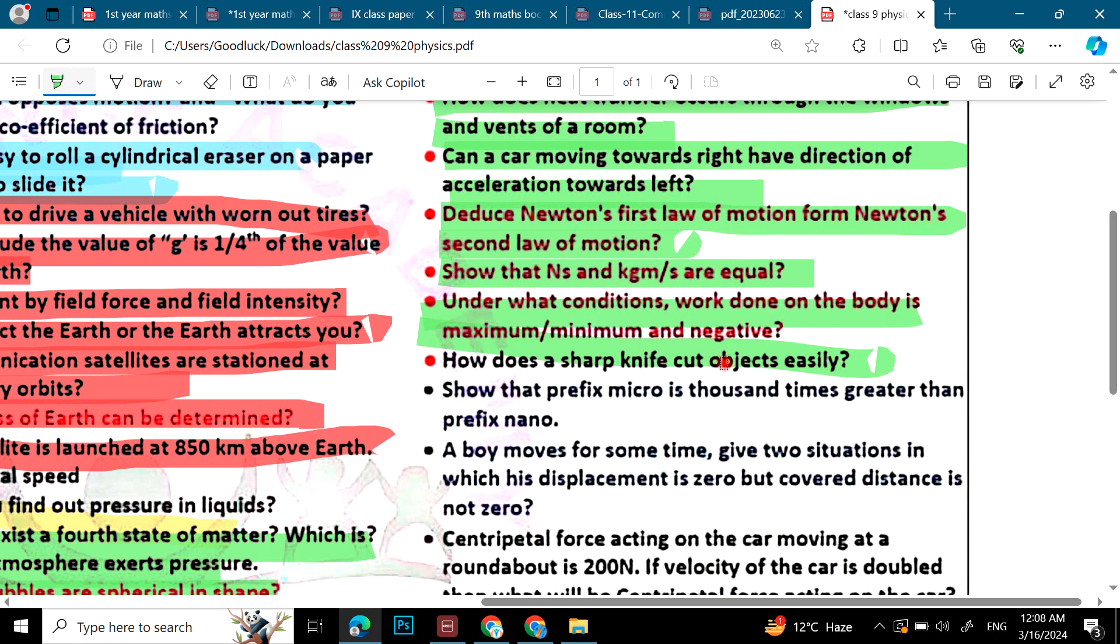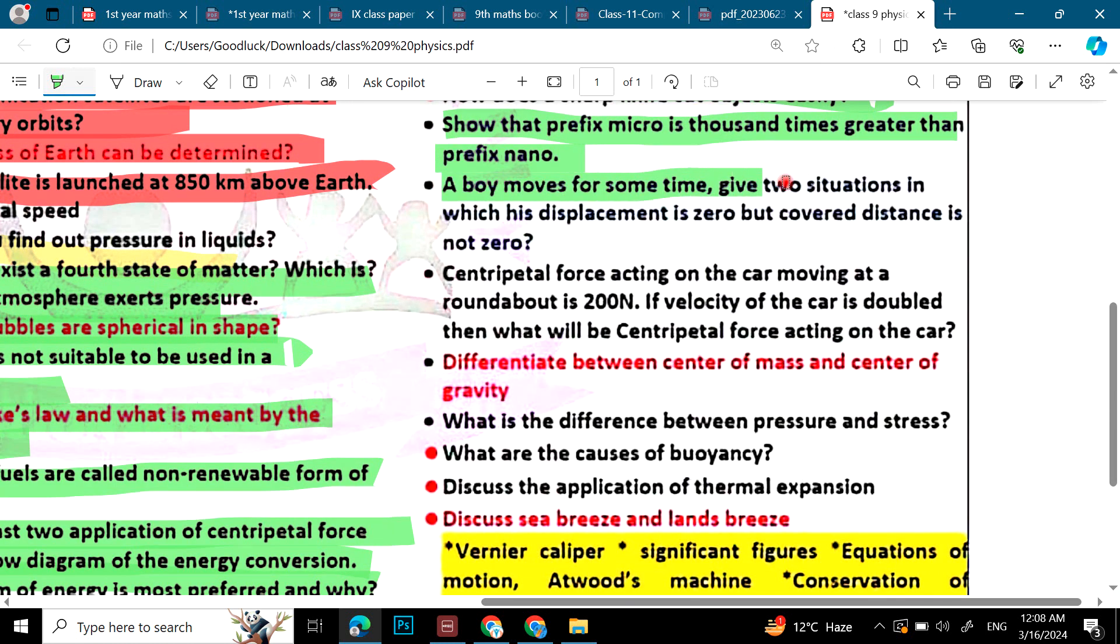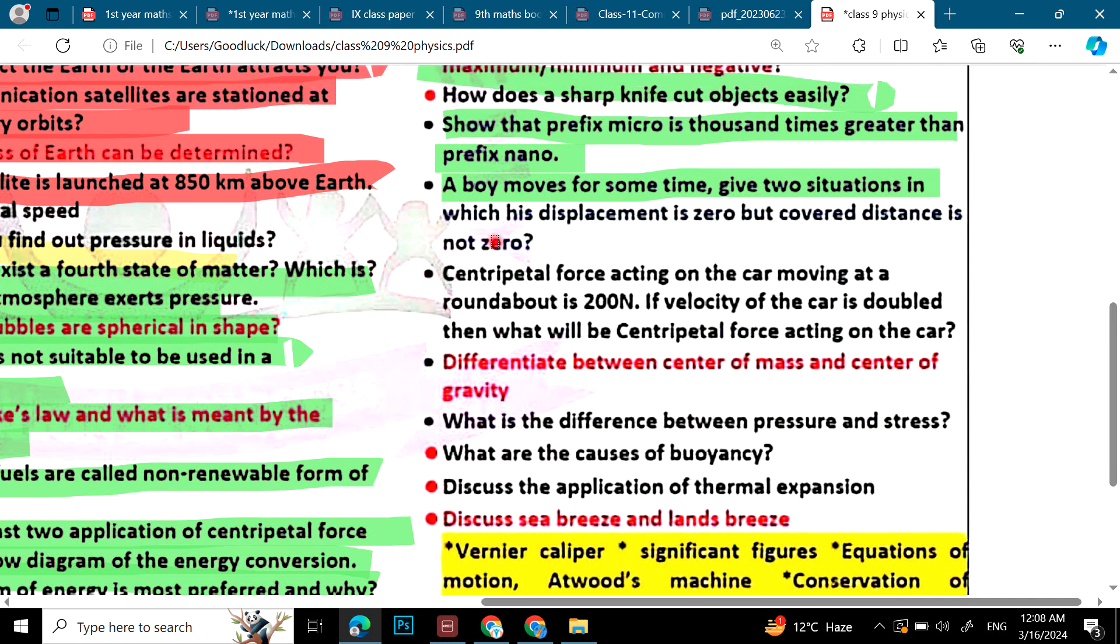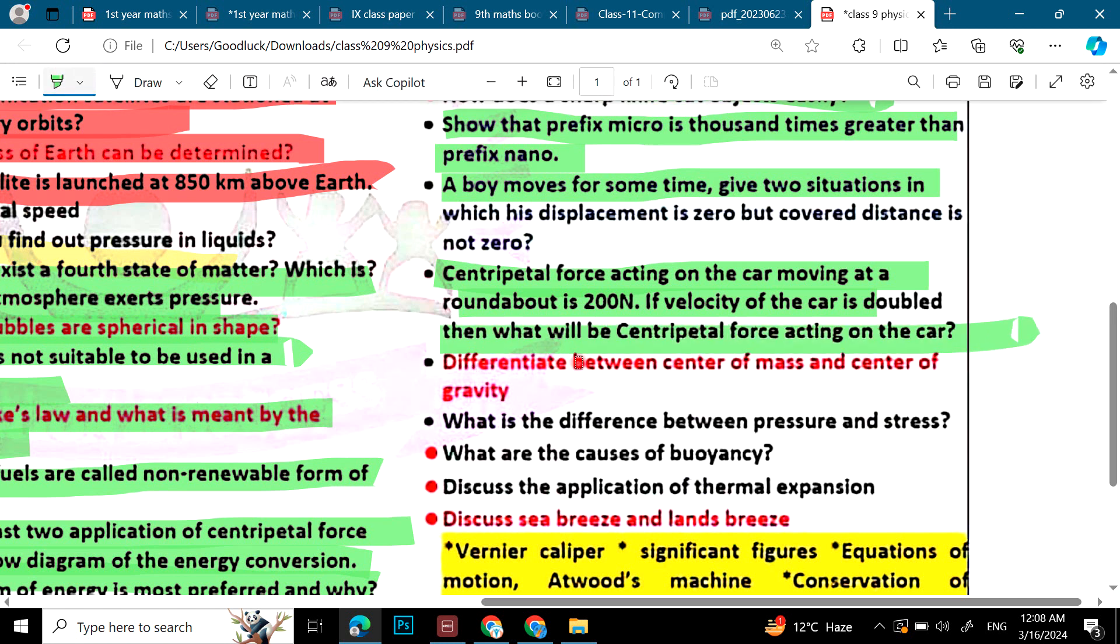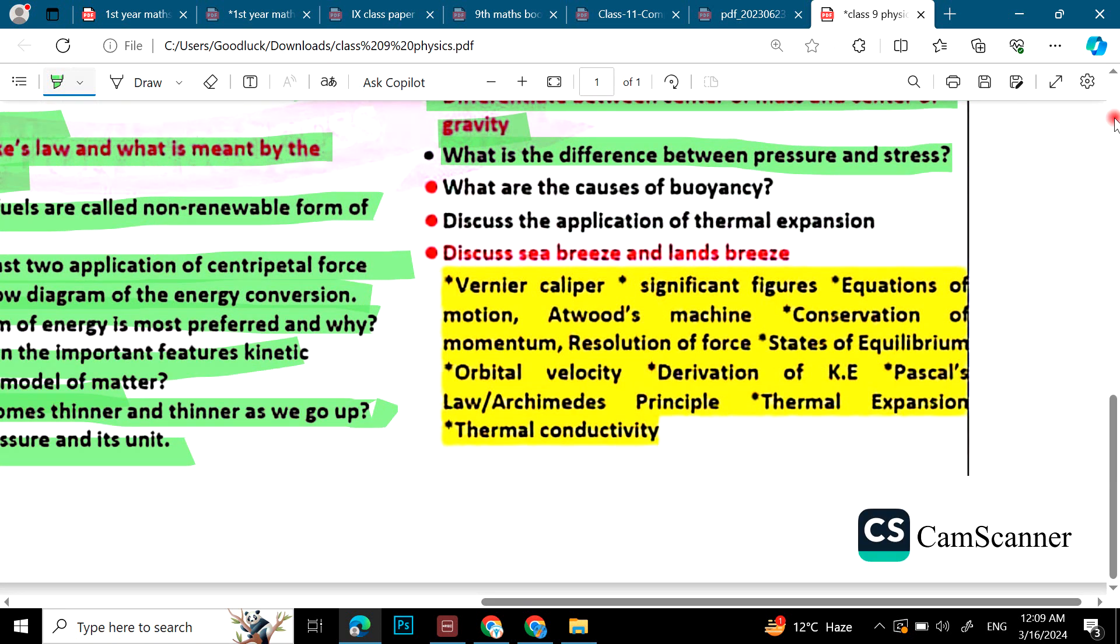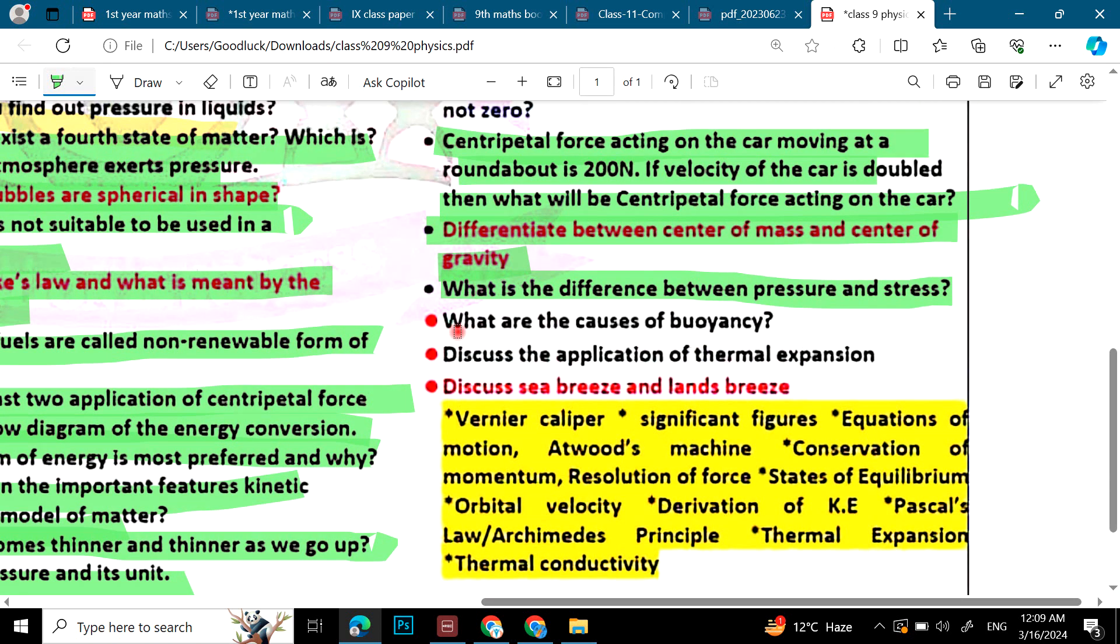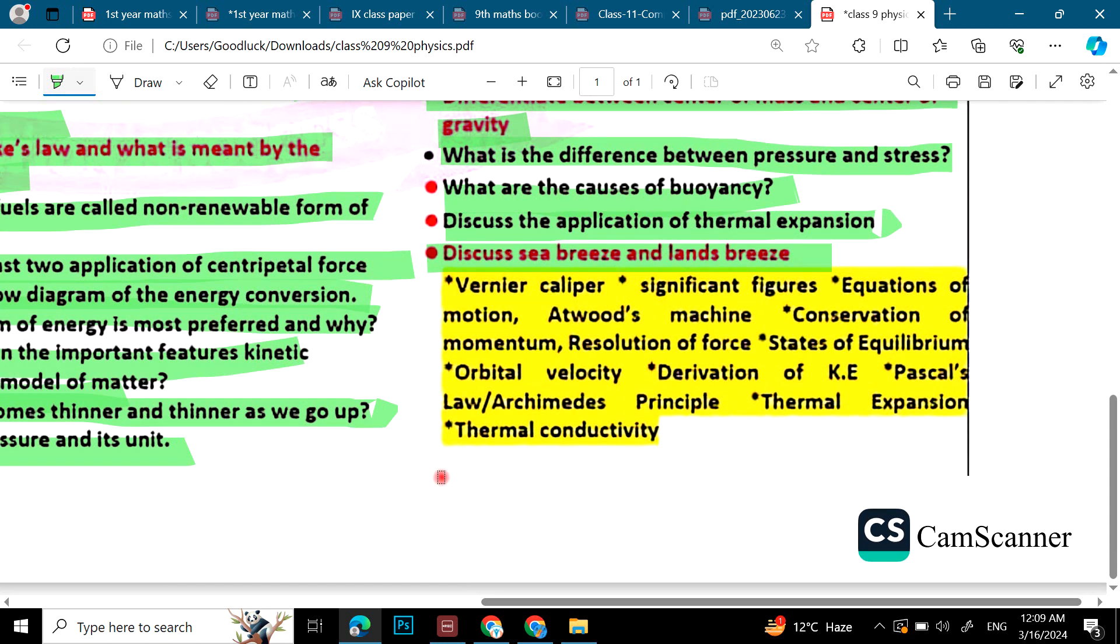How does a sharp knife cut objects easily. Show that prefix micro is 1000 times greater than prefix nano. A body moves for some time - give two situations in which its displacement is zero but covered distance is not zero. Centripetal force acting on a body. Differentiate between centre of mass and centre of gravity. What is the difference between pressure and stress? What are the causes of buoyancy? Discuss the application of thermal expansion. Discuss sea breeze and land breeze.